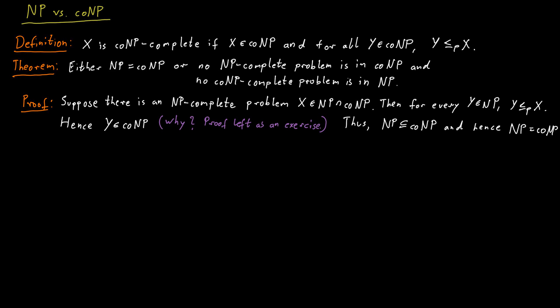So indeed, all NP-complete problems have to lie outside of co-NP, or NP has to be equal to co-NP. By analogous reasoning, co-NP-complete problems either lie completely outside of NP, or NP is equal to co-NP.